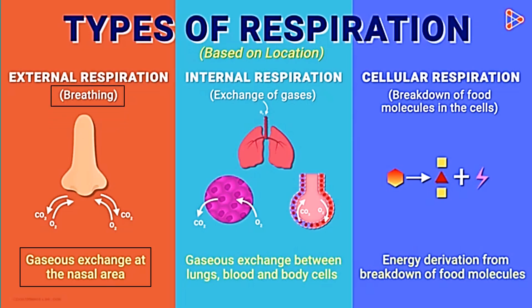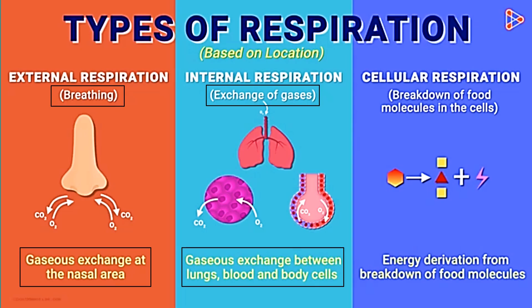Next is internal respiration. As the name suggests, it is the type of respiration that occurs internally, or inside the body. When the oxygen from the air reaches the lungs, it gets transported into the blood. Similarly, carbon dioxide from the blood is given out of the lungs until it reaches the nasal area. The oxygen will then travel to our body and will be received by the body cells, while the carbon dioxide in the body cells will transfer towards the blood. This exchange of gases that occurs in the lungs, blood, and body cells is called internal respiration.